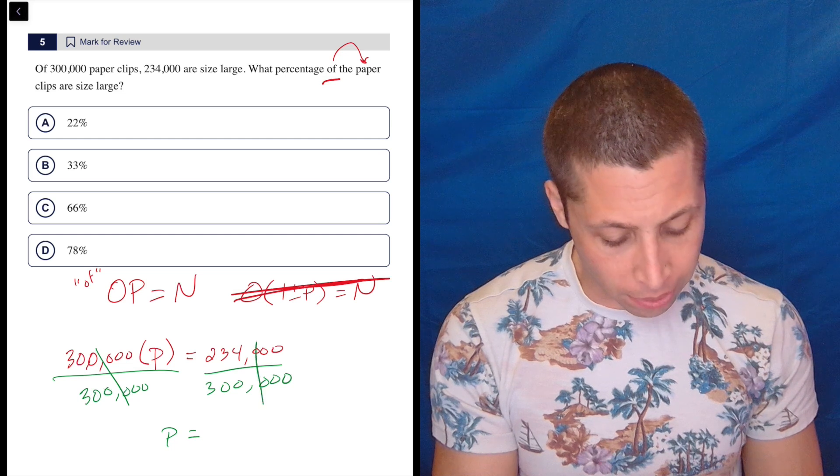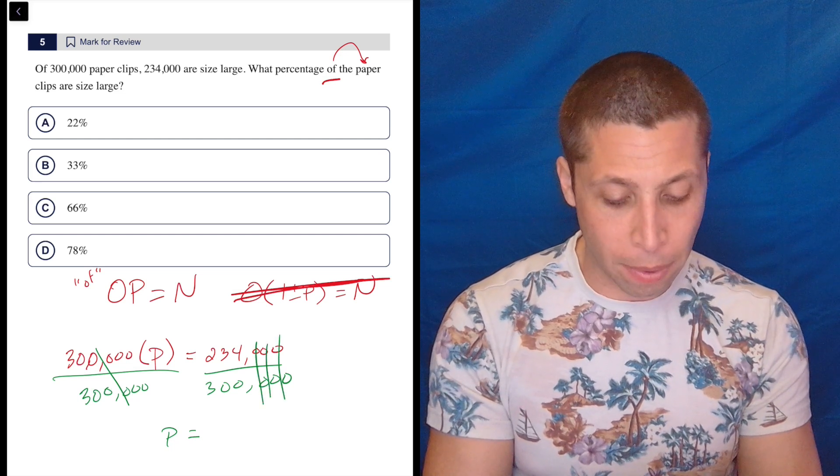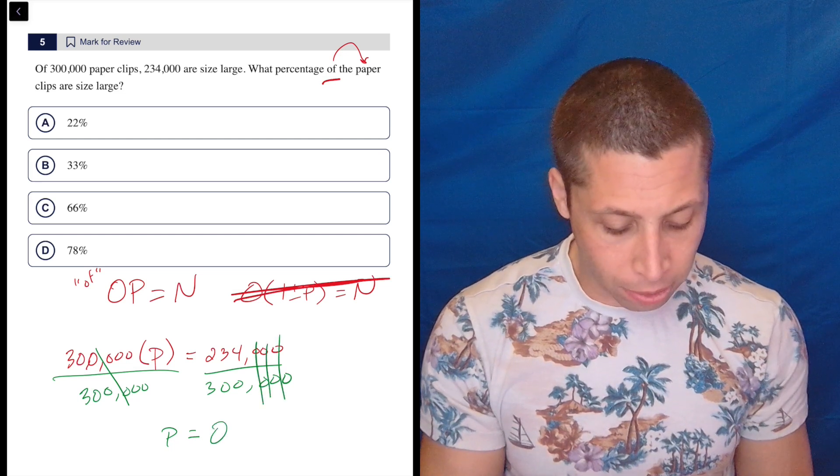And I'm also smart enough to just be like, these zeros don't matter. So 234 divided by 300 is 0.78.